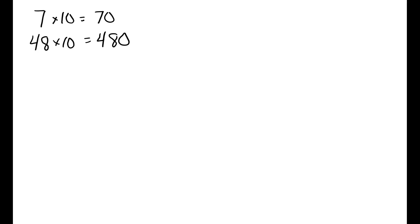Another way to say it is, in order to multiply a number by 10, you move the decimal point one place to the right. So, 7 times 10 — my decimal point starts out right here, and when I multiply it times 10, I move my decimal point one place to the right.